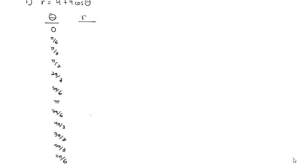When the angle is 0, the radius ends up being 8. Pi over 6 is approximately 7.5. Pi over 3 is approximately 6. Pi over 2 is 4. 2 pi over 3 comes out to 2. 5 pi over 6 comes out to 0.5. Pi is 0. 7 pi over 6 is 0.5. 4 pi over 3 is 2. 3 pi over 2 is 4 — you can see it's looking symmetrical. 5 pi over 3 is 6. And 11 pi over 6 is 7.5, going back to 8.